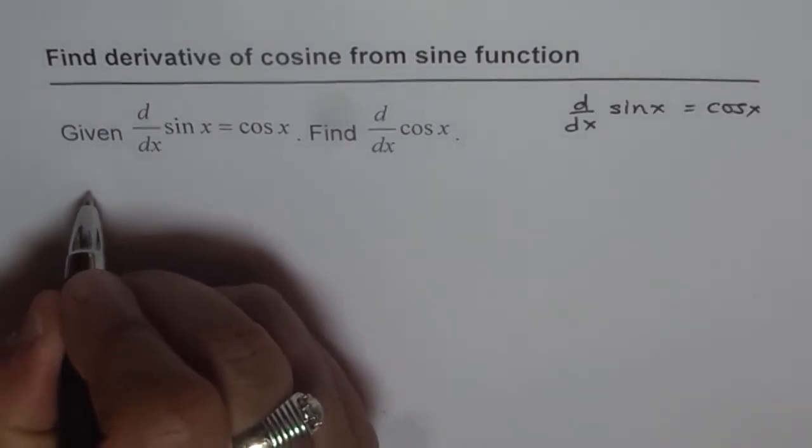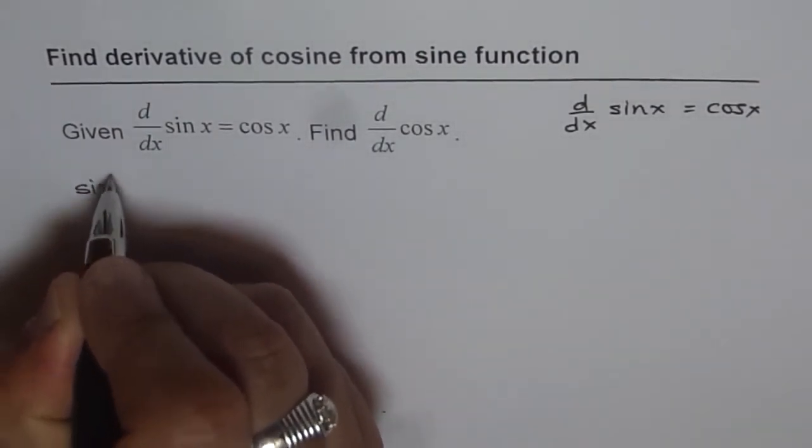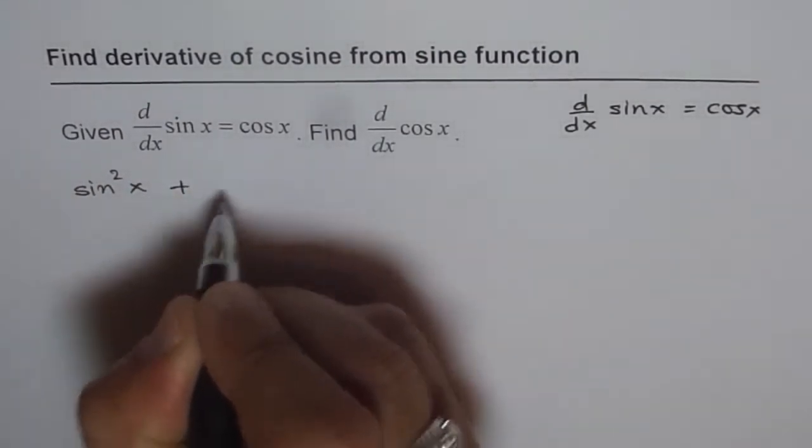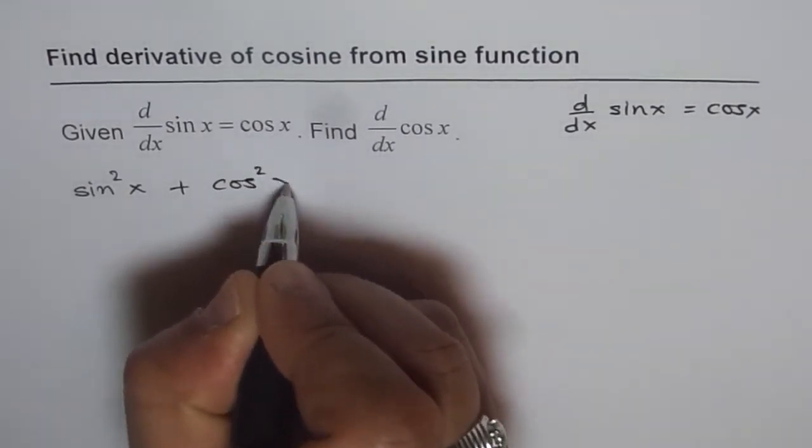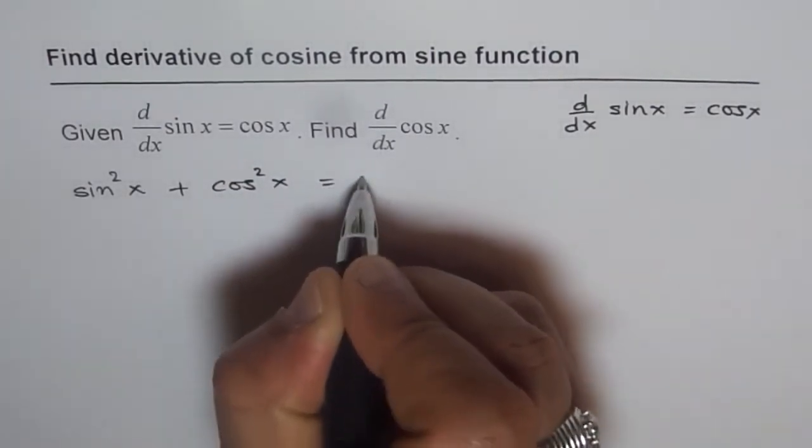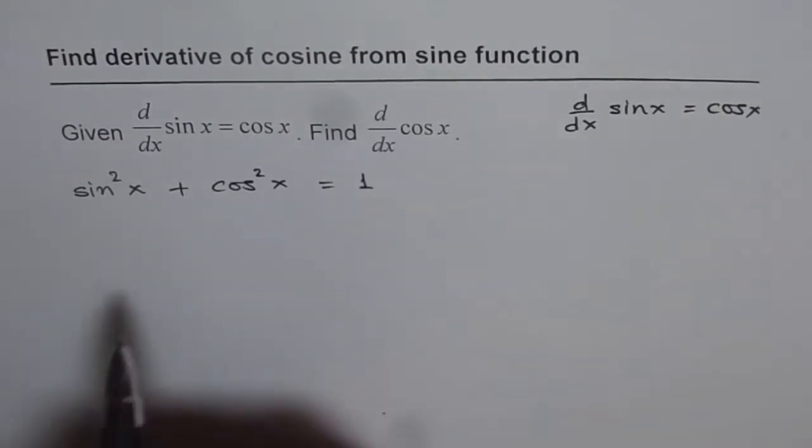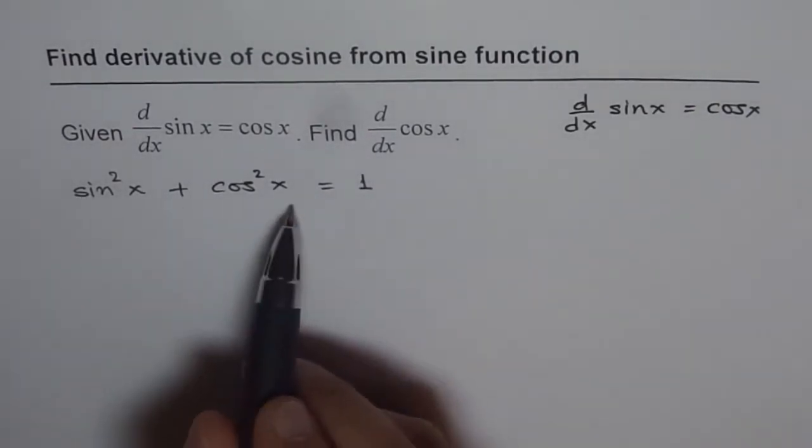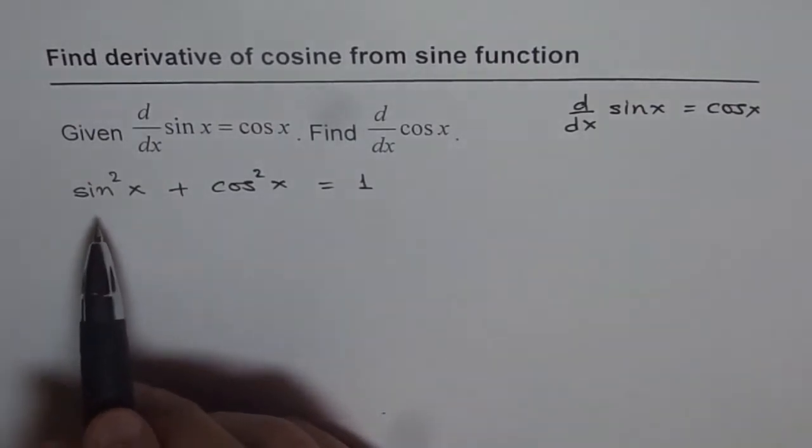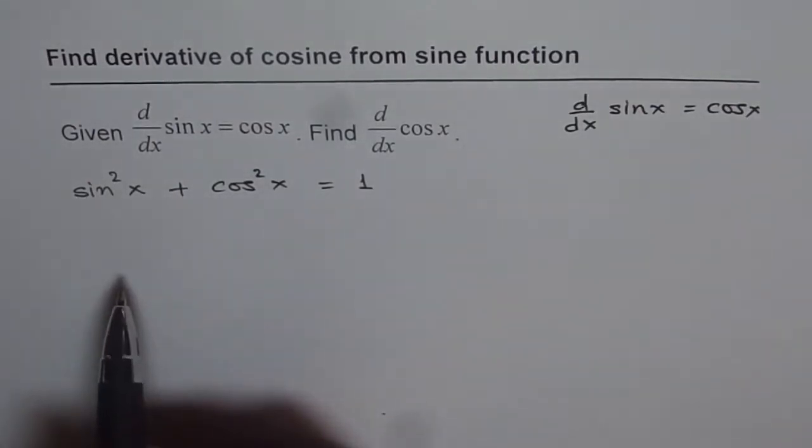Well you know the identity, that is sin²x + cos²x = 1. Now we can use this identity to find derivative of cosine x. Now as this is a function of x, we can differentiate both sides with respect to x.